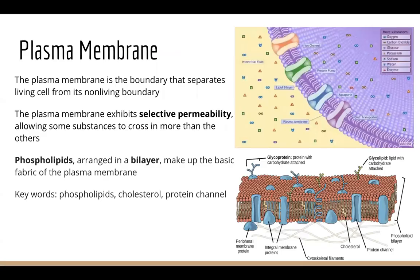Our cells have cell membranes which protect them from non-living boundaries in our body or an animal's body. Our cell membrane also has another name called the plasma membrane. The plasma membrane is the boundary that separates the living cell from its non-living boundary, and it exhibits something called selective permeability, which means it will only allow some substances to cross into our membrane more than others. Our cells only want very specific things to come in, and selective permeability allows our cells to do so.